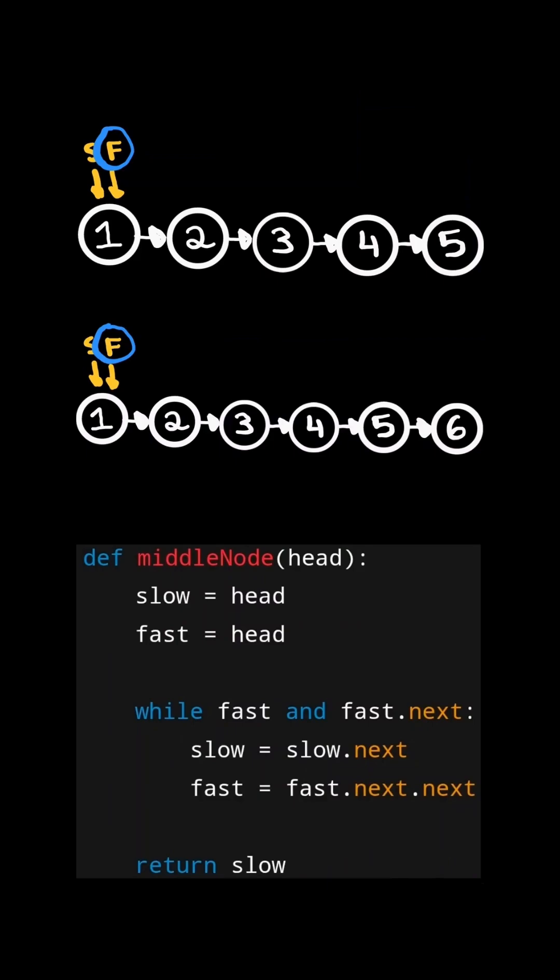While fast is not null and fast.next is not null, we will move fast by two steps and move slow by one step.